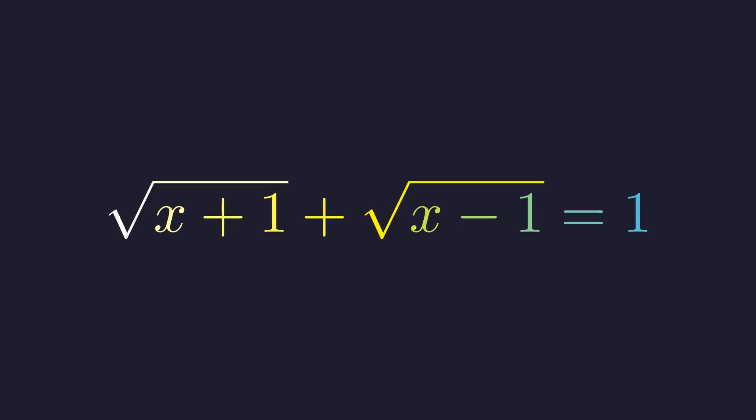Here's an equation that looks deceptively simple: the square root of x plus 1, plus the square root of x minus 1, equals 1. Square roots often hide interesting twists, and this one is no exception. We're not just going to solve it — we're going to uncover a beautiful contradiction lurking within. And if you stick around to the end, I'll show you two elegant bonus proofs that reveal this impossibility in completely different ways.